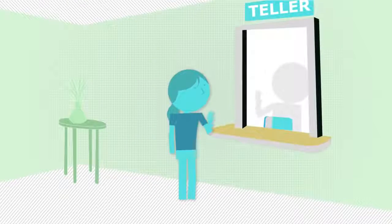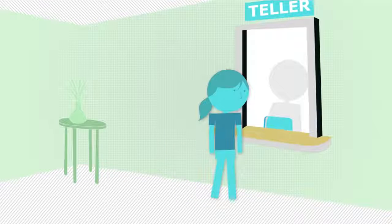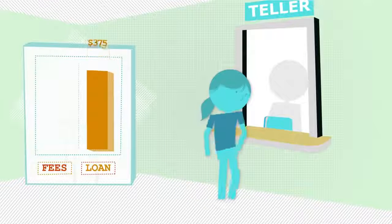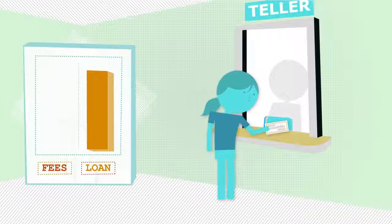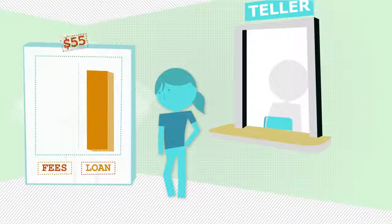Jennifer is short $375 on her rent, which is also the average payday loan amount. To get the loan, she just has to agree to pay a one-time fee of $55.